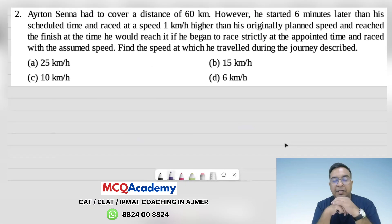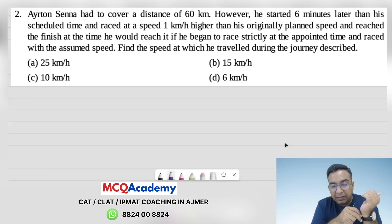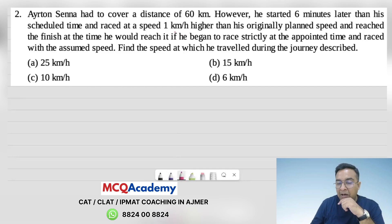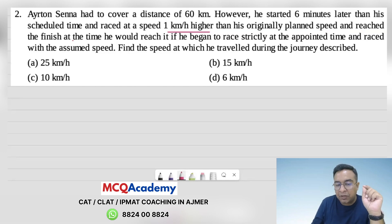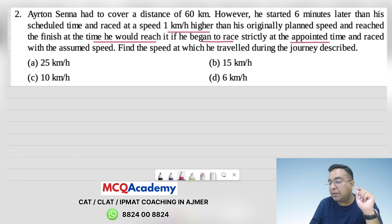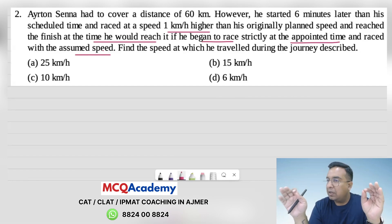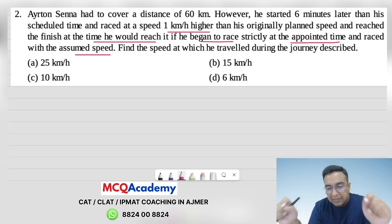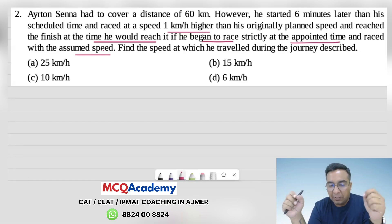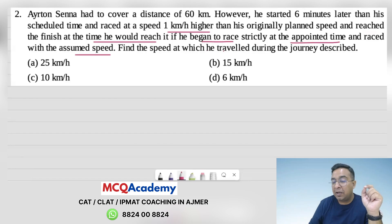Question number 2: Ayrton Senna had to cover a distance of 60 km. However, he started 6 minutes late than his scheduled time and raced at a speed of 1 km per hour higher than his originally planned speed, reaching the finish at the same time he would have if he had started on time at the planned speed.